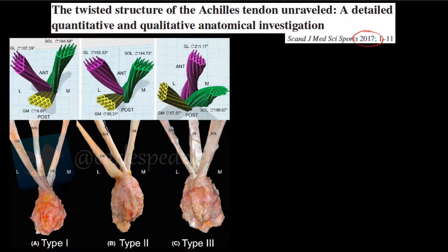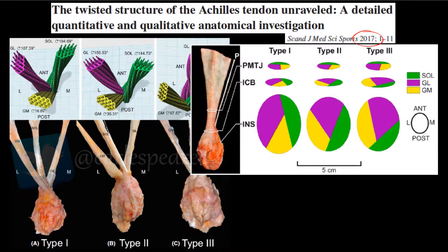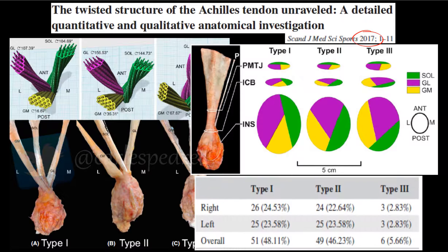In another article from the Scandinavian Journal of Science and Sports in 2017, they described three different types of rotation: type one, type two, and type three. It's much more complex than it seems — there is not just one anatomical rotation, there are three different types. They divide the distal part of the Achilles tendon into these three types. If we follow the gastrocnemius lateralis muscle, it starts and gets a rotation from its most distal part in each type.